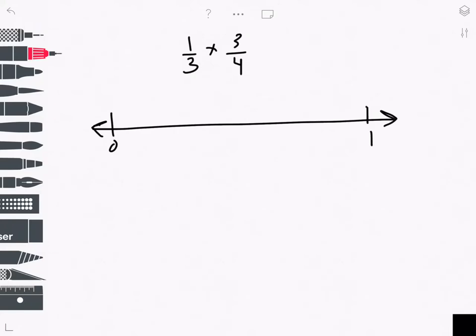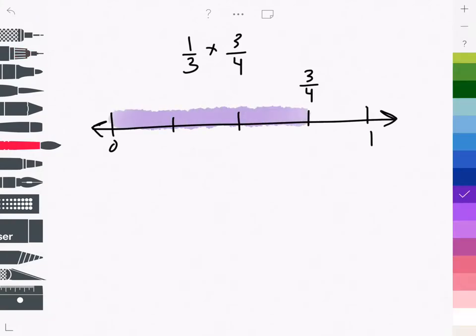Looking for 1 third of 3 fourths. So I'll start by dividing the number line into fourths, I want to mark 3 fourths. I'll highlight that to show the length 3 fourths.